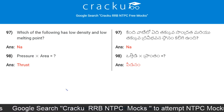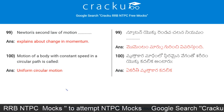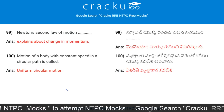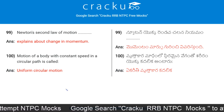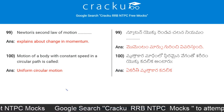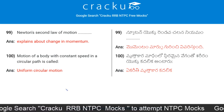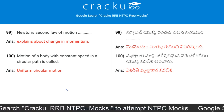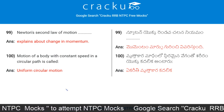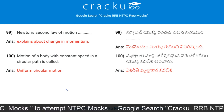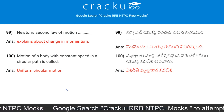Pressure multiplied by area is equal to thrust. Newton's second law of motion explains change in momentum. Motion of a body with constant speed in a circular path is called uniform circular motion.